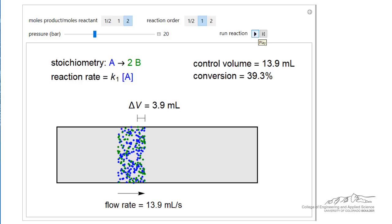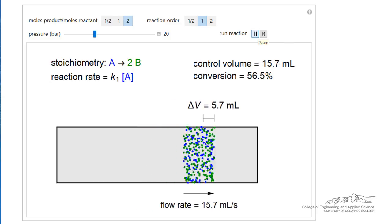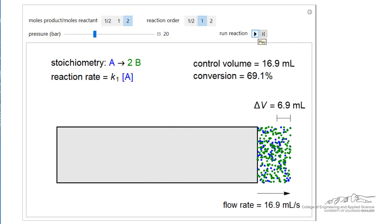And notice now the volume that was originally 10 milliliters has now expanded to 13.9 because we have more moles. And as we continue to run it will continue to expand. And the simulation shows what the change in volume is at the outlet. The conversion is 69%.